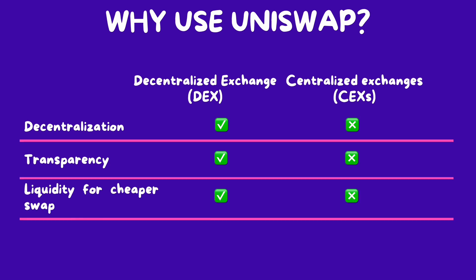Third, liquidity. DEX can offer improved liquidity by allowing anyone to create and provide liquidity to a pool, making swaps cheaper, lossless, and accessible. Anyone can trade any tokens or create a market for any token. In this way, DEX are more accessible to a wider range of users. Those reasons make Uniswap better than traditional exchanges.